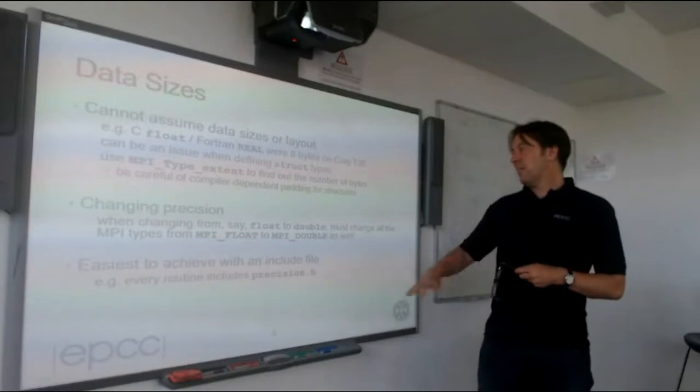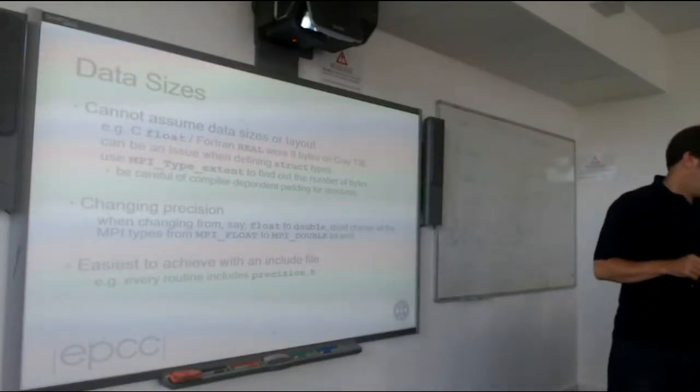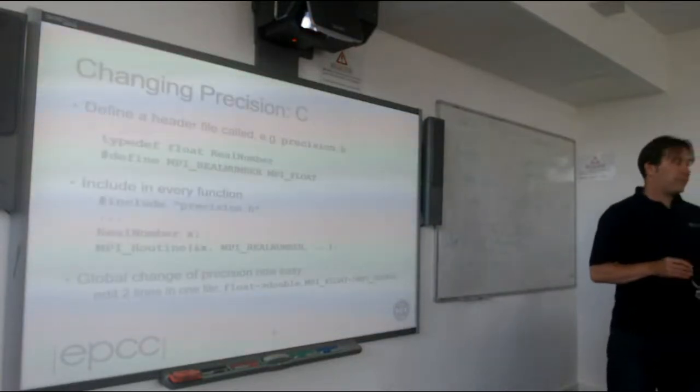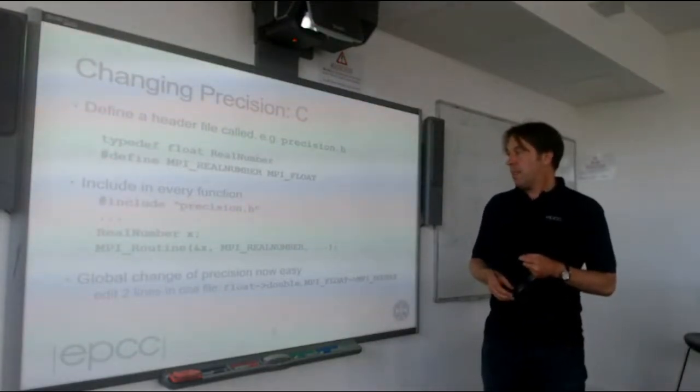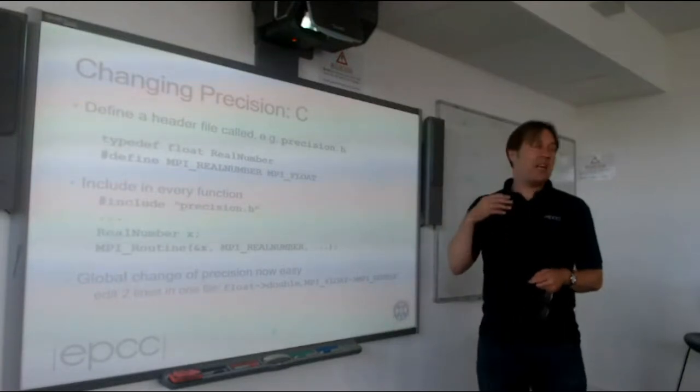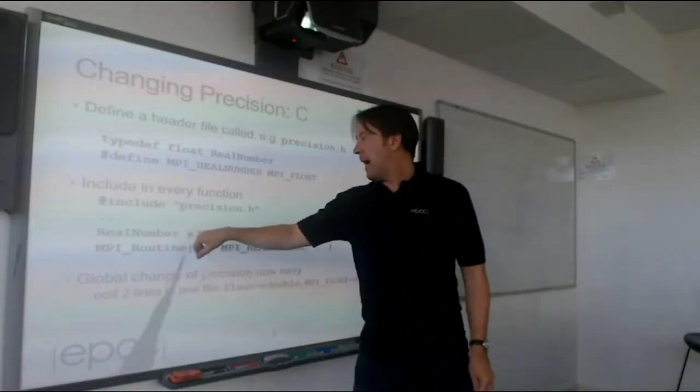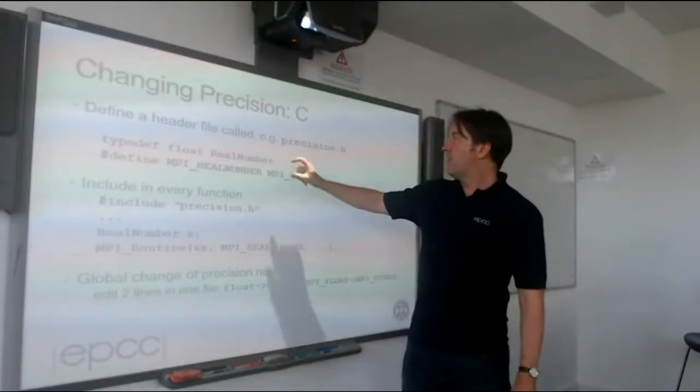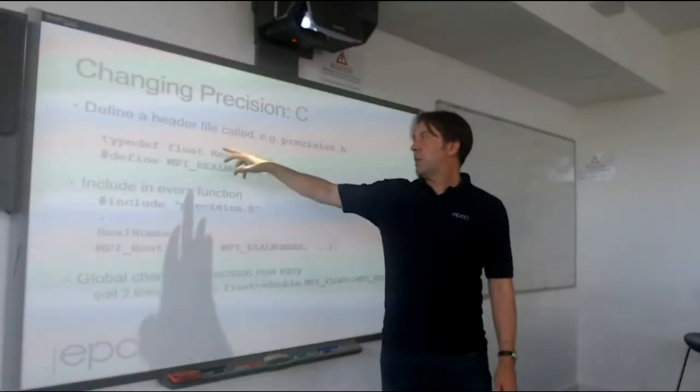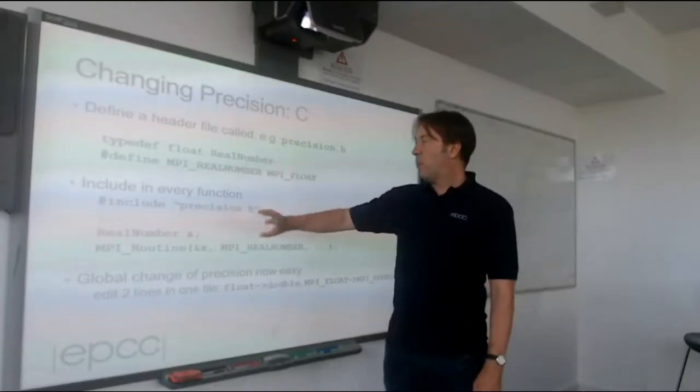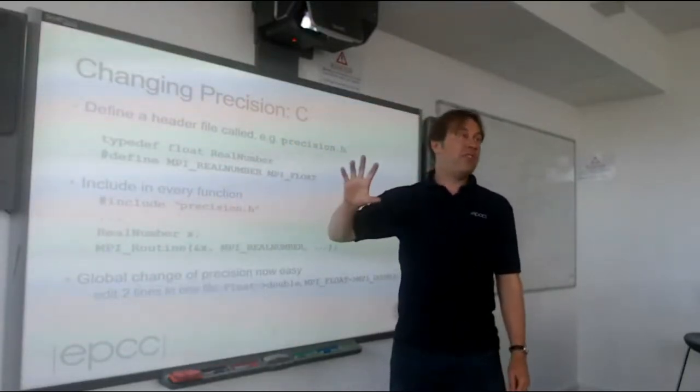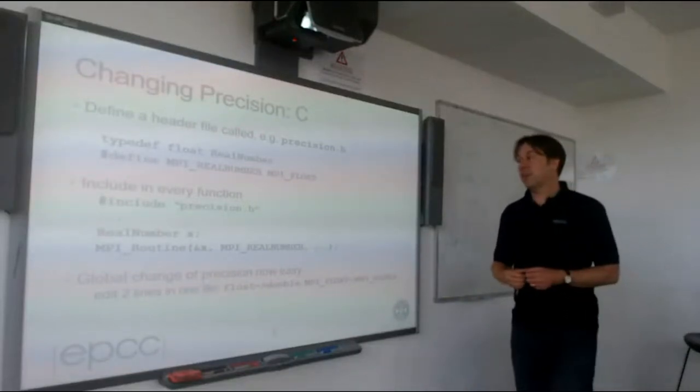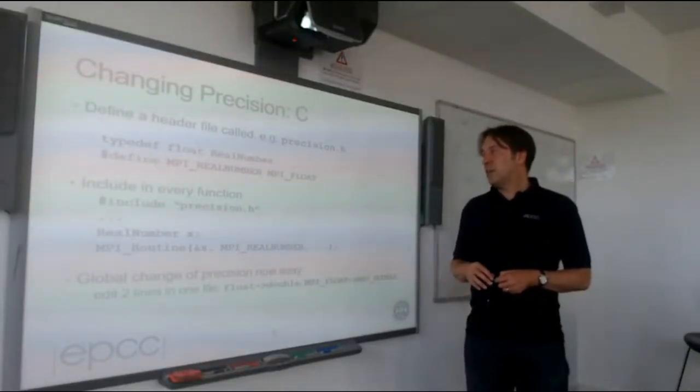Not only do you have to change from float to double, you have to change all your MPI floats to MPI doubles. So you shouldn't be relying on compiler tricks to fix your code. You should fix your code. Actually, for a number of reasons, it's quite nice to have your precision defined in a precision.h file. What you do is you never say float or double in your program, you say real number x, and when you call an MPI routine, you say MPI real number. Then you have a single header file, you typedef float real number and hash define MPI real number MPI float. If you want to change to double, you change these two lines in one file.